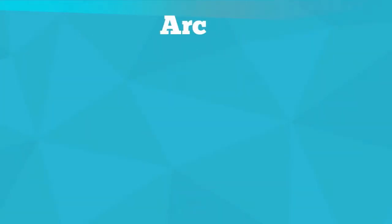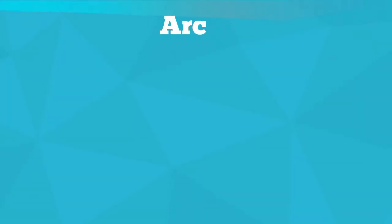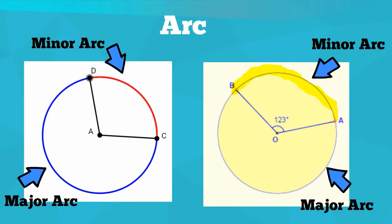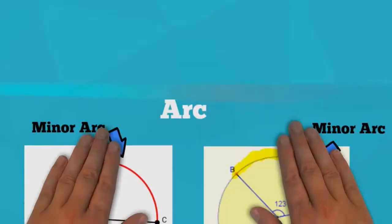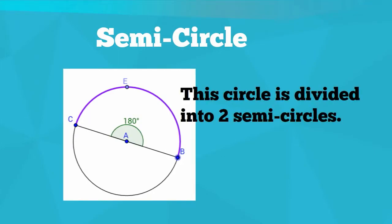An arc is the distance around a fraction or portion of the circumference. The minor arc is an arc with a measure less than 180 degrees. A major arc is an arc with a distance greater than 180 degrees. A semicircle is an arc with a measure of exactly 180 degrees.